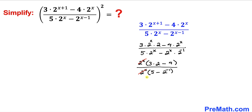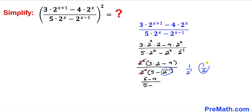So we are left with: 3 times 2 is going to become 6, minus 4, divided by 5 minus 2 power negative 1. Now 2 power negative 1 is the same as 1 divided by 2 power 1, which is the same as 1 divided by 2. Therefore we subtract 1 divided by 2 from 5 in the denominator.